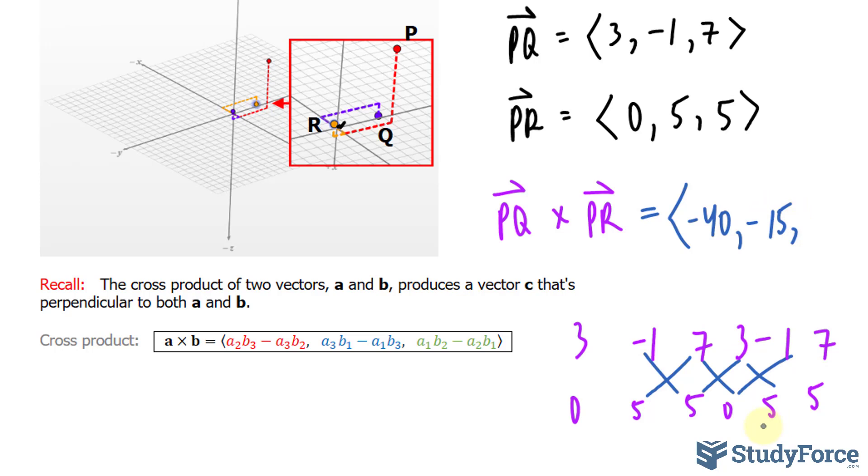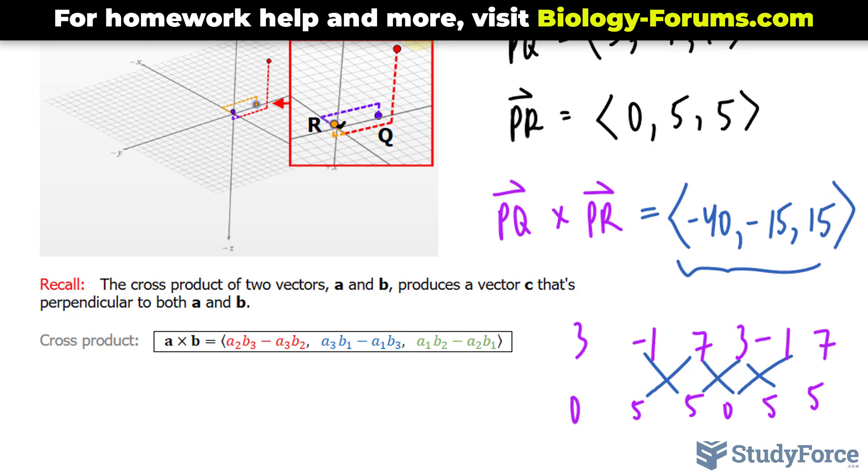3 times 5 is 15, minus the product of these two, which is 0. We end up with 15. So this vector, with the X, Y, and Z components of negative 40, negative 15, and 15, is perpendicular to a plane that passes through these two points.